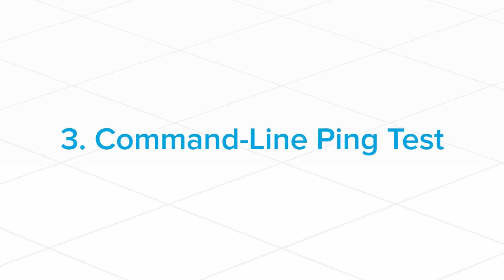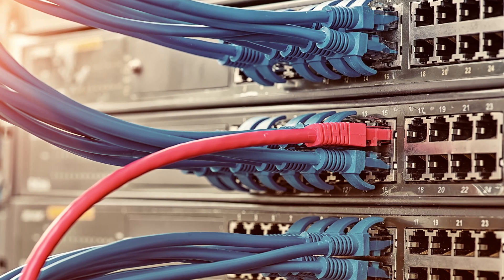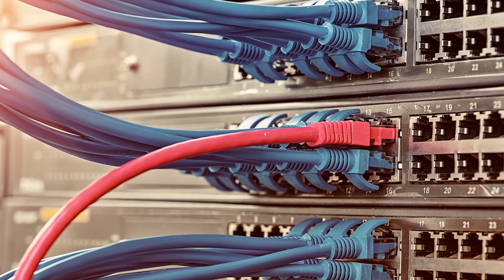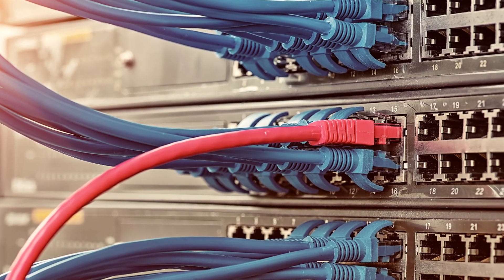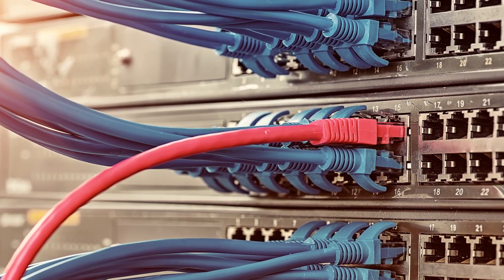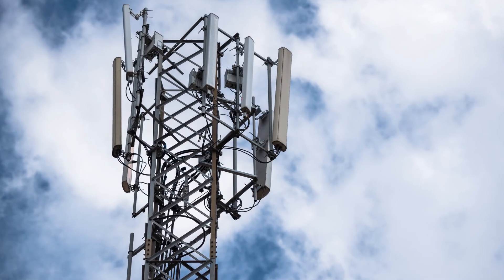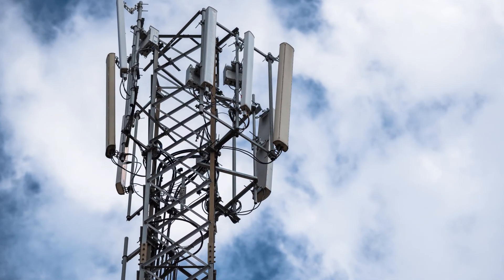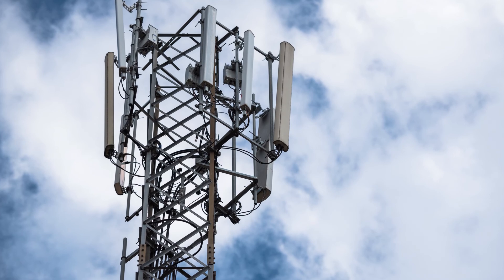Finally, the third method is to run a command line ping test. This can be done on a Mac or computer running Windows 10. It is first recommended to run the test on your local area network to determine if the problem is with your devices like computers, phones, or internet switches. You may then want to run the test on your wide area network to determine if the problem is with your internet service provider.